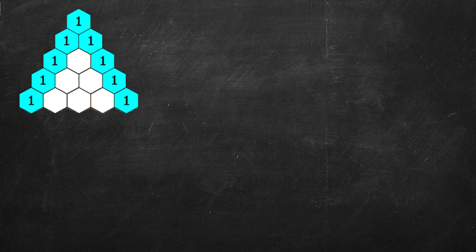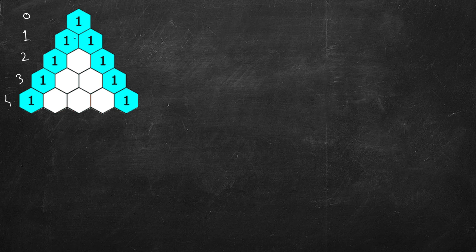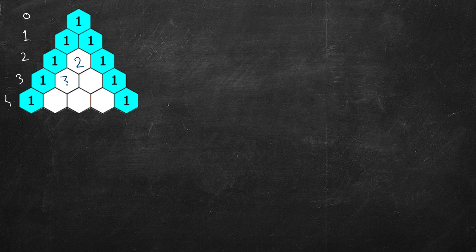In row number zero we have one. Then row number one, two, three, four — it continues. In row zero we have one, then the next row has one one. From here onwards, the leftmost and rightmost will be one. The number of elements increases by one each row. The inner values are the sum of the two above — so one plus one is two, one plus two is three, and so on.